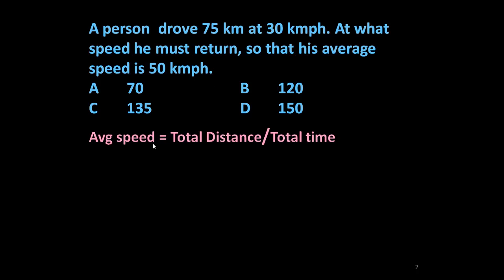We know the formula average speed equals total distance upon total time. Here total distance is 75 km going plus 75 km returning, so total distance is 75 plus 75 equals 150 km.